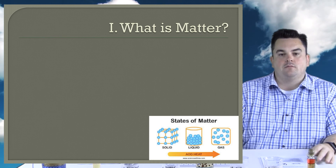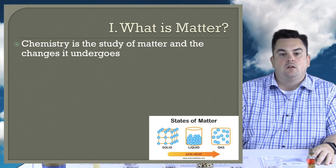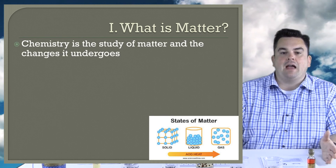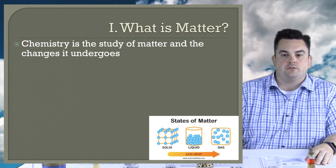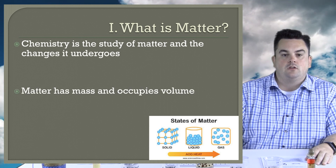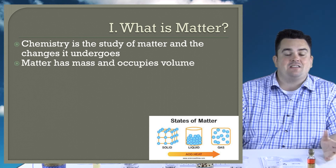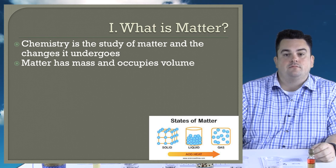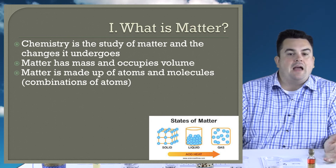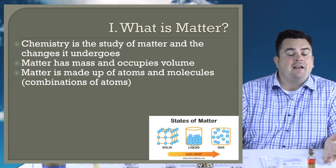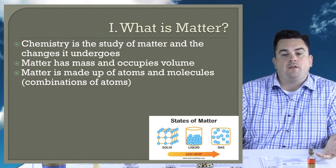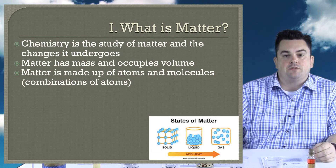What is matter? Chemistry is the study of matter and the changes it undergoes. Matter has mass and occupies volume. Mass is the amount of matter and volume is the amount of space that matter occupies. Matter is made of atoms and molecules. Molecules are combinations of atoms.